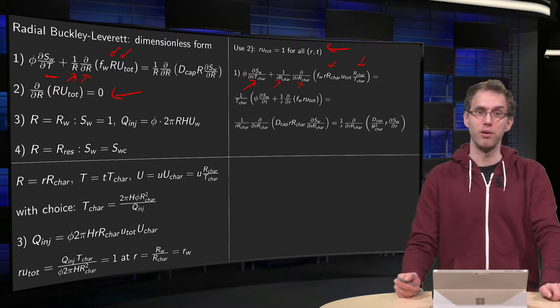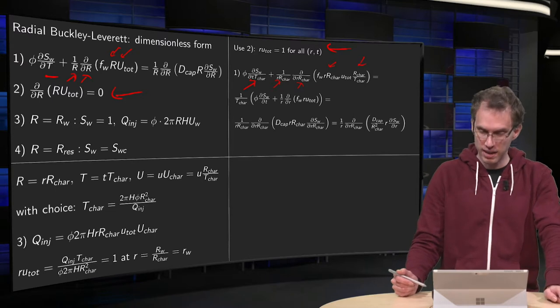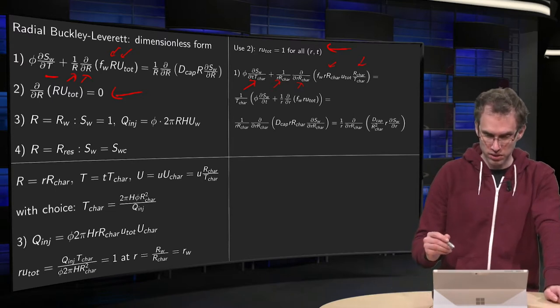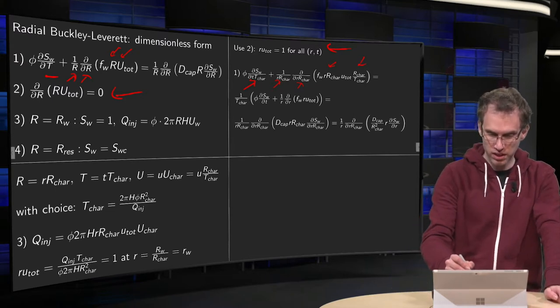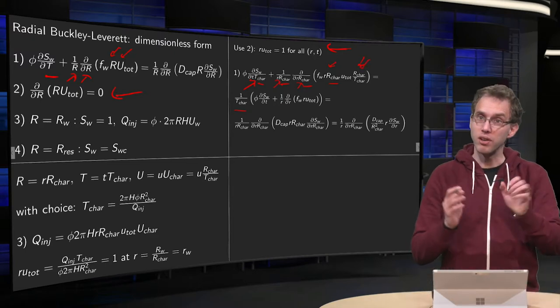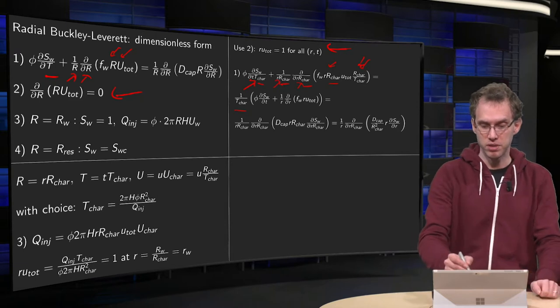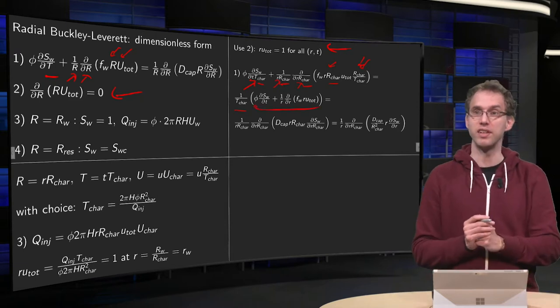FW is fractional flow, so it is dimensionless. And then you see that we can take out the T-characteristics over here. And then we get factors R-characteristics which are cancelling out. So, that's the left hand side. It's just a 1 over T-characteristics times the dimensionless version of the left hand side.